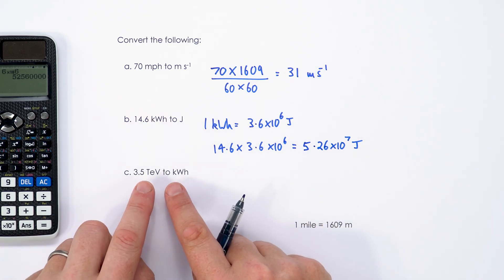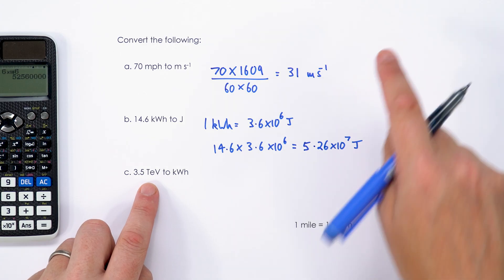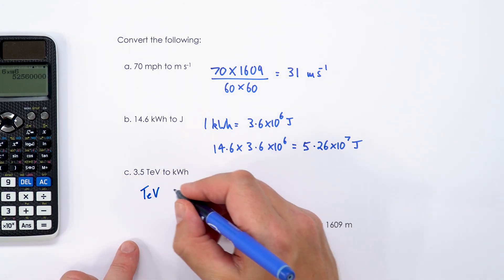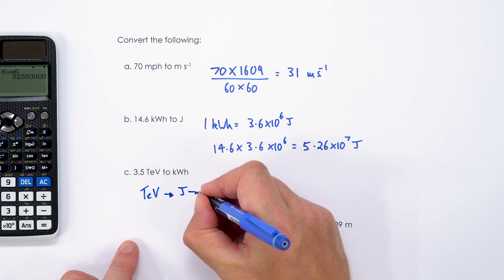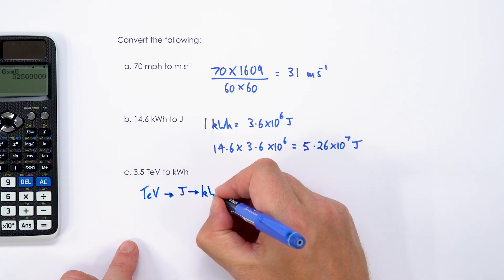And finally we're going to go from electron volts to joules to kilowatt hours. So we're going to be going from tera electron volts, we're going to convert that into joules, and then we're going to convert that again into kilowatt hours.